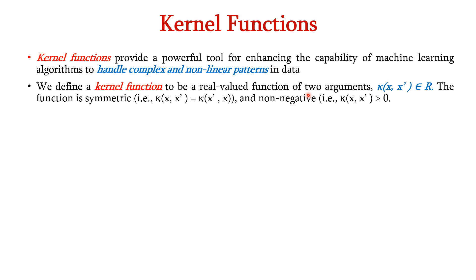We can define the kernel function as a real-valued function of two arguments represented as K belonging to R. This function is symmetric and non-negative. Symmetric means K of X comma X dash is equal to K of X dash comma X, and the value of K of X comma X dash will always be greater than or equal to 0.